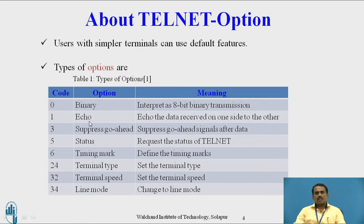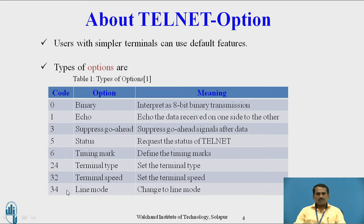Next, code 1 is echo. Then there is suppress go-ahead, status, and timing mark. Code 24 is terminal type, which sets the terminal type. Code 32 is terminal speed, which sets the terminal speed while transmitting data from one user to another. Code 34 is line mode, which changes to line mode. The different modes are: default mode, character mode, and line mode.